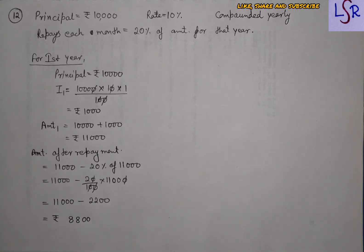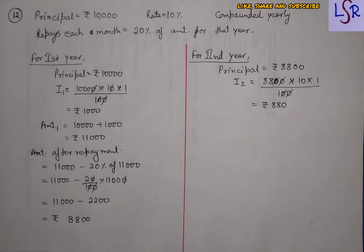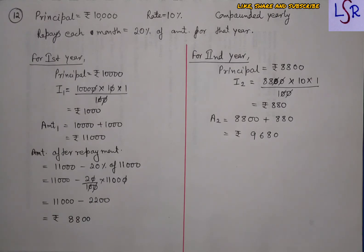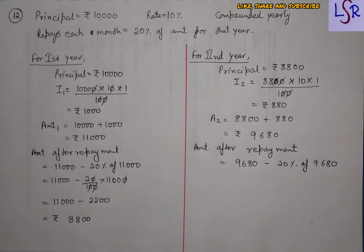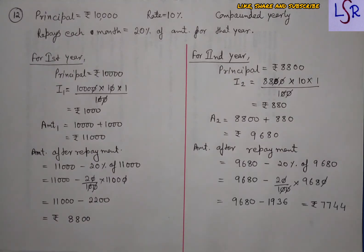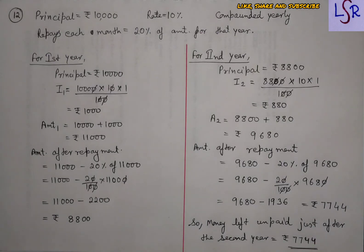For the second year: principal = 8,800, interest = 880, amount = 9,680. Amount left after repayment = 9,680 − 20% of 9,680 = 9,680 − 1,936 = 7,744. So rupees 7,744 is left unpaid just after the second year. That's all from this video, thank you.